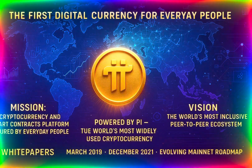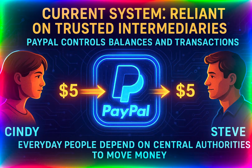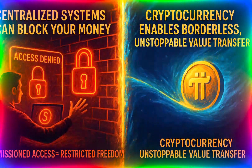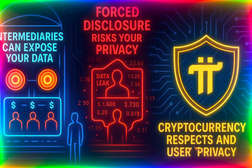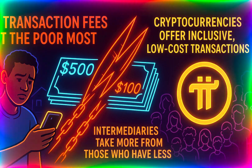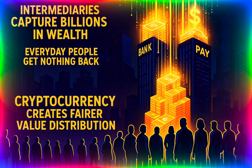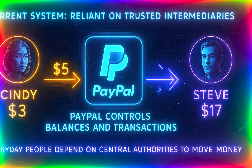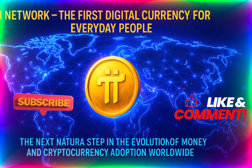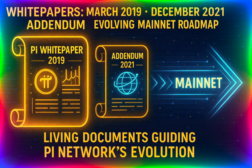Pi Network is the first digital currency designed for everyday people, representing the next natural step in the evolution of money and cryptocurrency adoption worldwide. The mission of Pi Network is to build a cryptocurrency and smart contracts platform secured and operated by everyday people. Its vision is to build the world's most inclusive peer-to-peer ecosystem and online experience, fueled by Pi, the world's most widely used cryptocurrency.